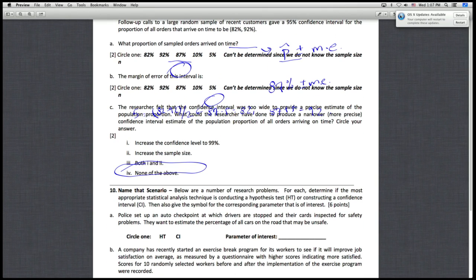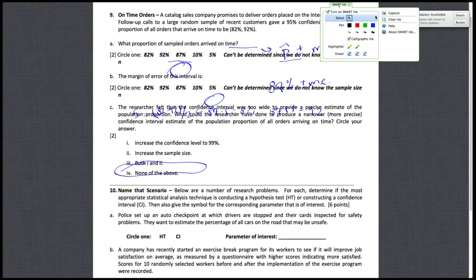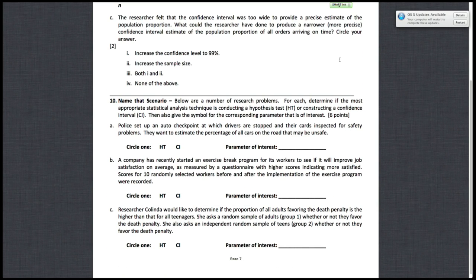So, for question 10, name that scenario. It's just giving you a list of scenarios, asking you to determine if it's a confidence interval or a hypothesis test, and then state the parameter of interest. So, for A, police set up an auto checkpoint at which drivers are stopped and their cars are inspected for safety problems. They want to estimate the percentage of all cars on the road that may be unsafe. So, since you're just estimating the percentage and you're not testing a statement, it's a confidence interval, and your parameter of interest is the percentage of all cars on the road that may be unsafe. So, just your P, population proportion P.